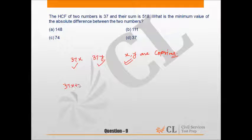Now in the question it is given that 37x plus 37y equals 518. From here we can say that x plus y equals 518 divided by 37, that is equal to 14.